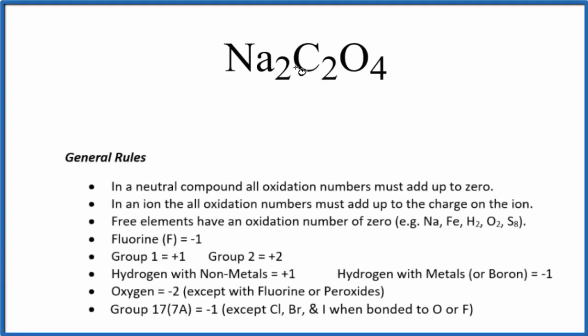In this video, we'll find the oxidation number for the carbon here in Na2C2O4. The first thing we notice, there's no negative or positive sign. That's because it's neutral. And when we have a neutral compound, all the oxidation numbers add up to zero.